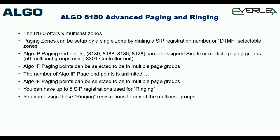With a second SIP registration, the Algo can ring with a totally different ringtone, or you could load a recording such as 'This is a call from ABC company' repeating continuously. If a call comes in on the other set of lines and rings the other SIP registration, it can say 'This is a call from XYZ.' The staff would know from the ringtone or announcement exactly which company or department is calling.